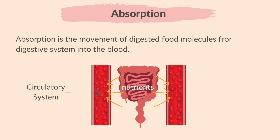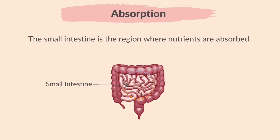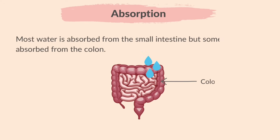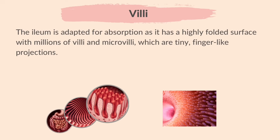Finally, let's learn about absorption. Absorption is the movement of digested food molecules from the digestive system into the blood. The small intestine is the region where nutrients are absorbed. Most water is absorbed from the small intestine, but some water is also absorbed from the colon. The ileum is adapted for absorption as it has a highly folded surface with millions of villi and microvilli, which are tiny finger-like projections.